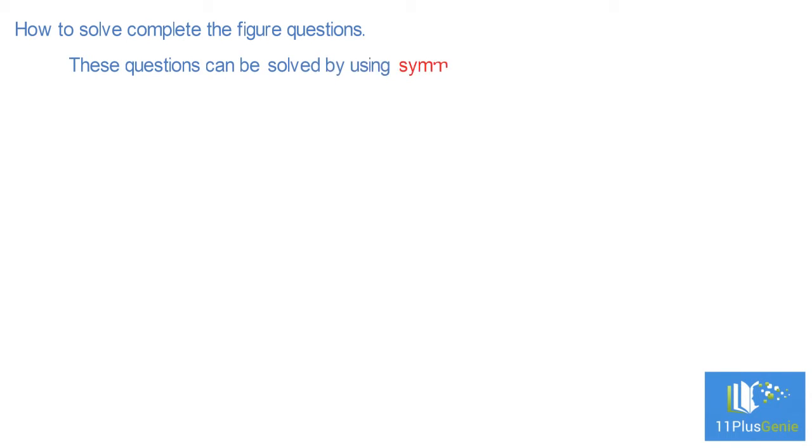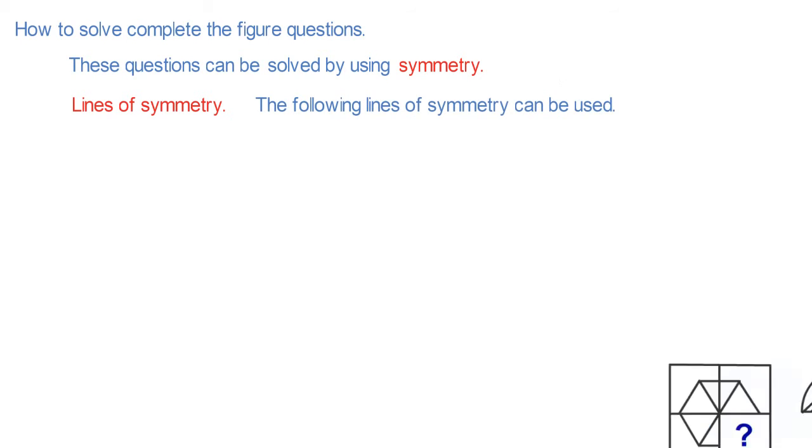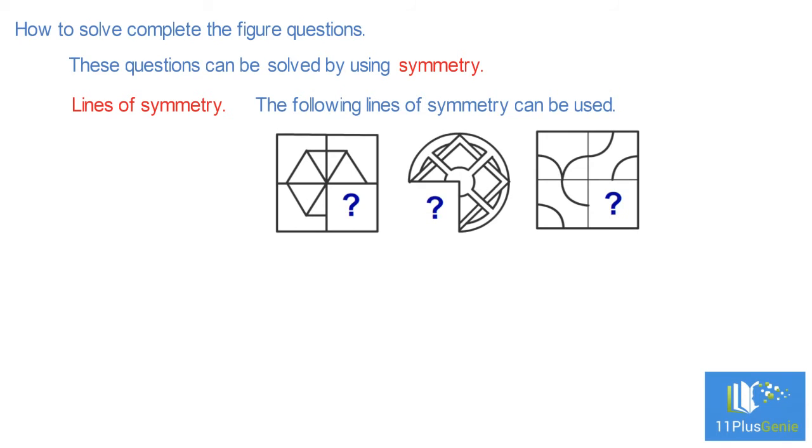Lines of symmetry: The following lines of symmetry can be used. For this diagram, you can use either this vertical line as the line of symmetry or you can use this horizontal line as a line of symmetry.